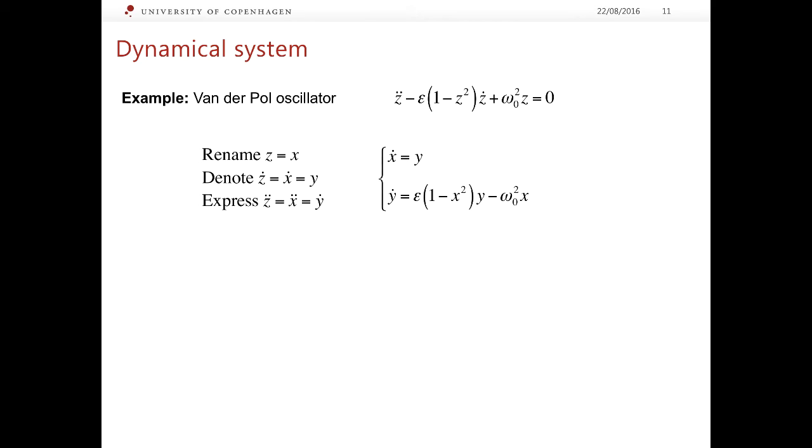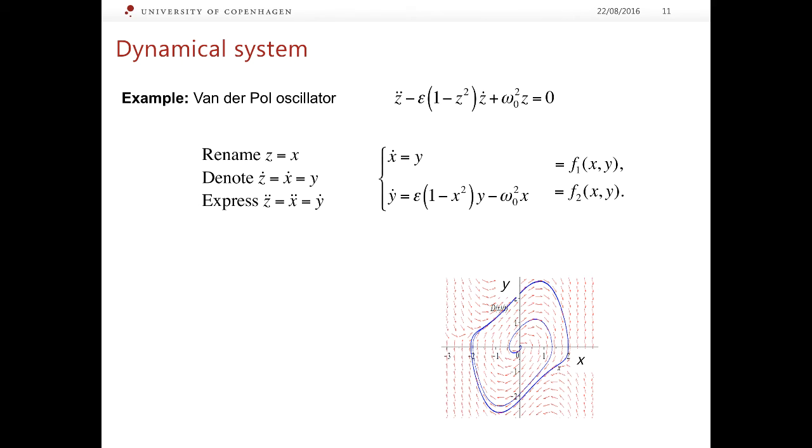This way we effectively introduced two state variables x and y and we can write down the above as a system of two first order ordinary differential equations which in fact define the dynamical system. Let us denote the right hand sides of these equations as f₁ and f₂. The figure here shows the phase space of the given system which appears to be the phase plane because the dimension of the system is 2.